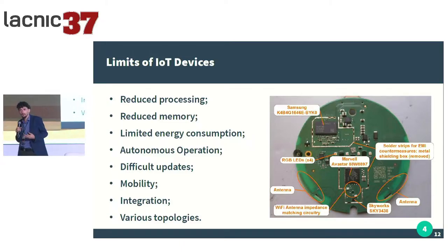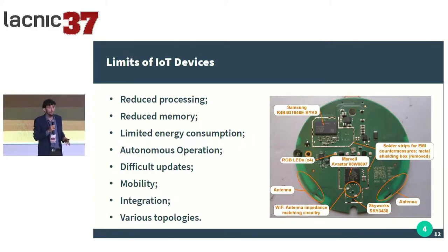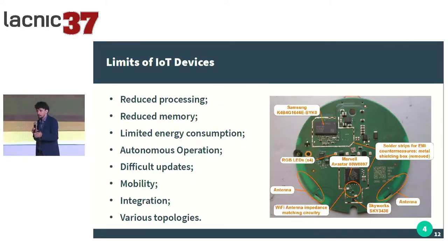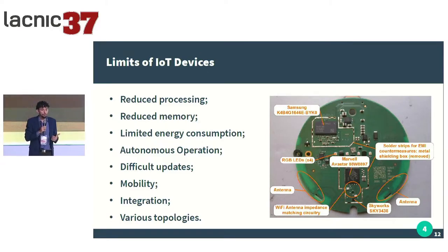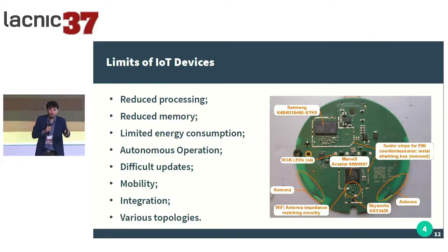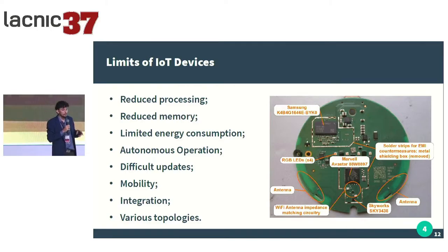What are the things that differentiate an IoT device? I brought some very important characteristics. First, we have reduced processing in those devices. We also have very reduced memory, which limits the range of protocols that we can use. There are also many moments with limited energy use, being disconnected from the electric network, so the cost of energy is less.